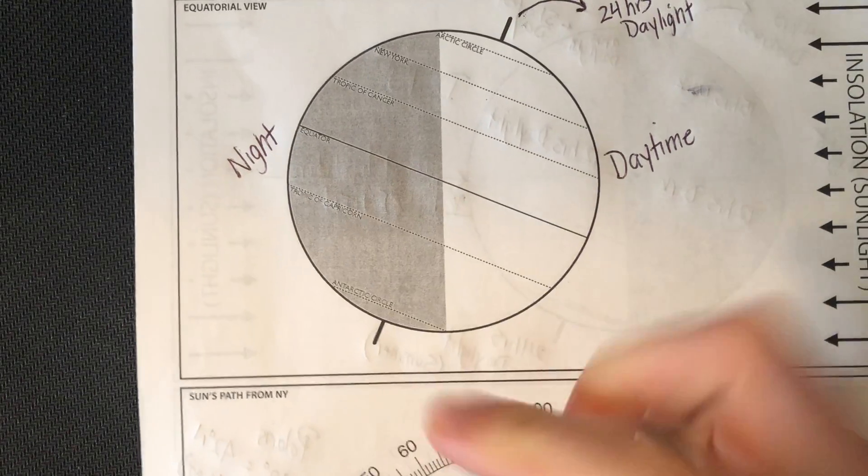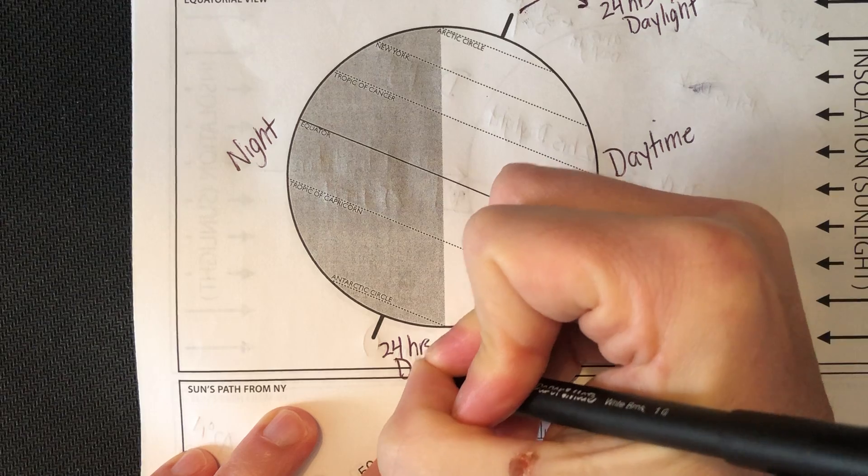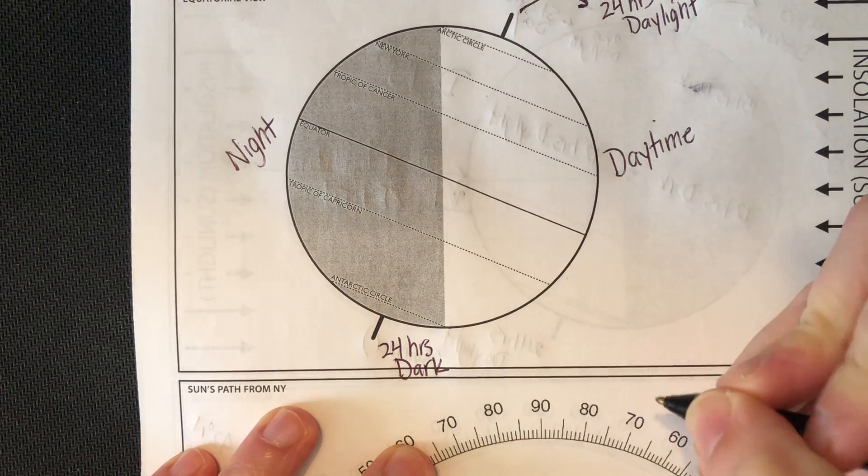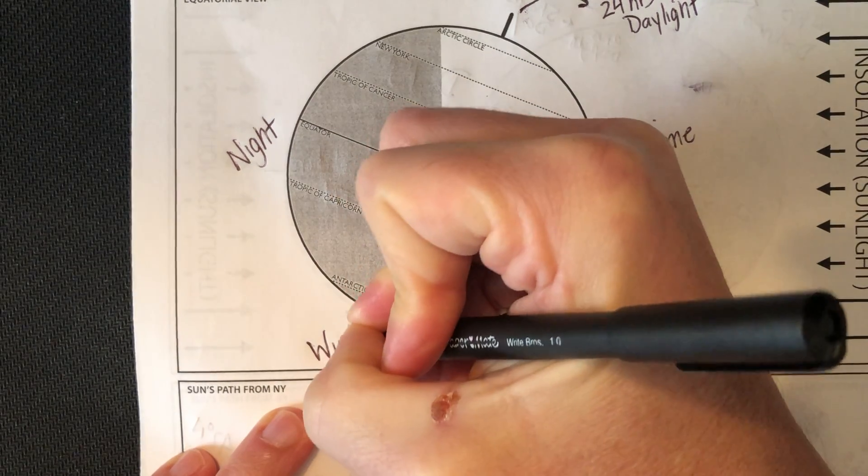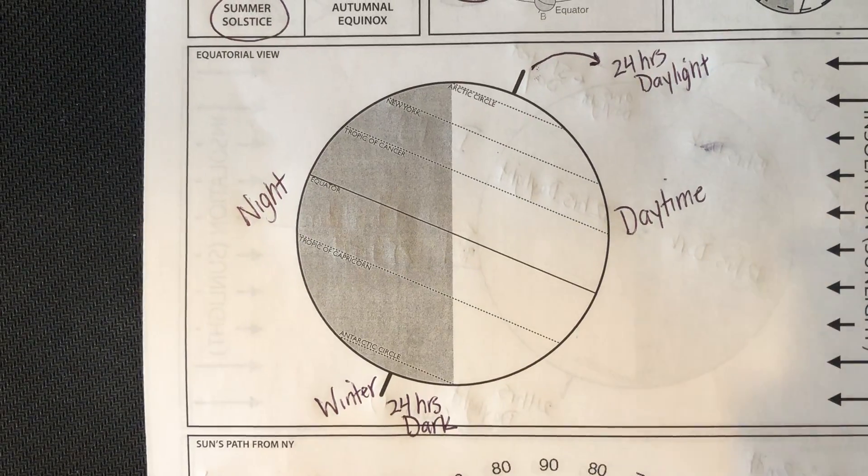If you look at the south pole, it's in 24 hours of darkness, which means that this is going to be their wintertime. North and south pole are always going to be opposite.